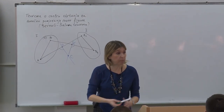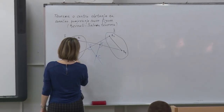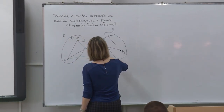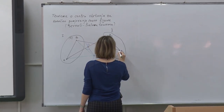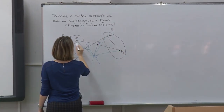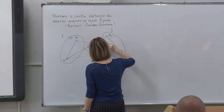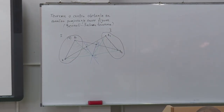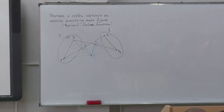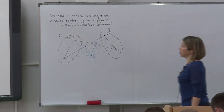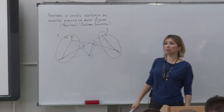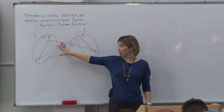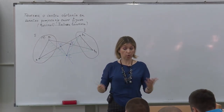Kako sad možemo interpretirati to obrtanje? Hajmo uočiti trouglove ABC i CA1B1. Šta možemo konstatovati za ova dva trougla? Ova dva zelena trougla su podudarni. Upravo možemo zaključiti da se naša ravna figura može prevesti iz položaja 1 u položaj 2 rotacijom oko tačke C za neki konačni ugao.